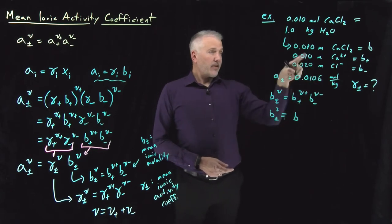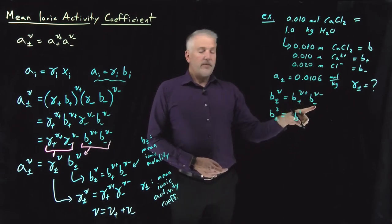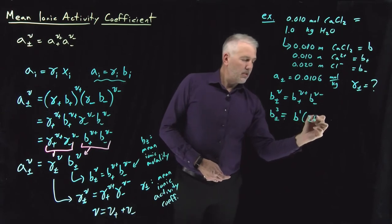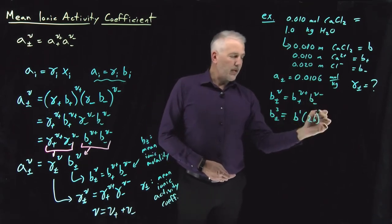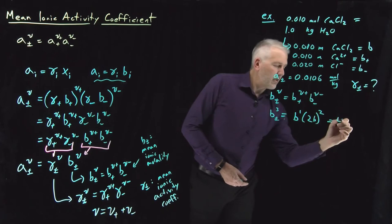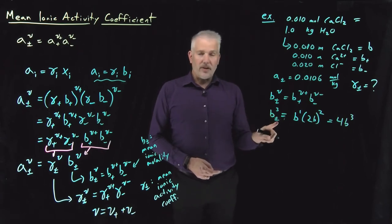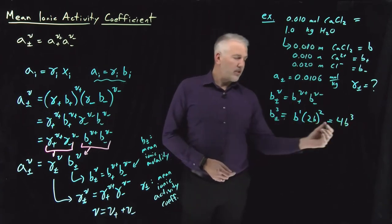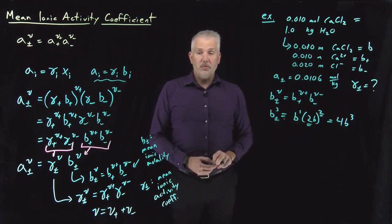To make this more general for a one-to-two salt: if the total salt molality is B, the cation molality equals B (raised to the first power). The anion molality is twice as big, 2B, raised to the second power because we have two anions entering solution. So 2B quantity squared is 4B², multiplied by an extra B gives 4B³. This means the mean ionic molality cubed always equals four times the molality of the original solution, cubed, for any one-to-two salt.